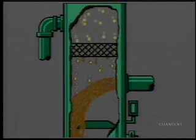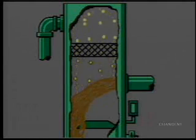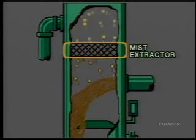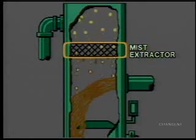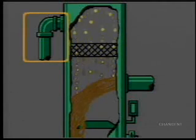Gas rises through the separator carrying some liquid in the form of mist. This mixture passes through the mist extractor. This pad is usually made of knitted wire mesh. Liquid mist collects on the pad and as droplets form and become larger, they fall into the liquid accumulation section. The gas leaves the separator through the gas outlet near the top of the vessel.